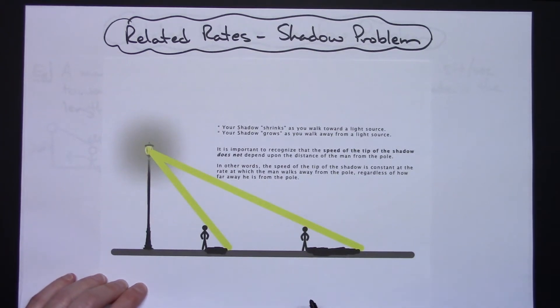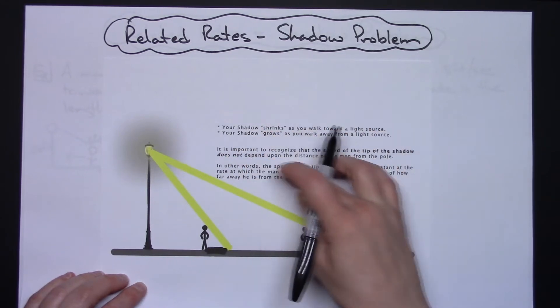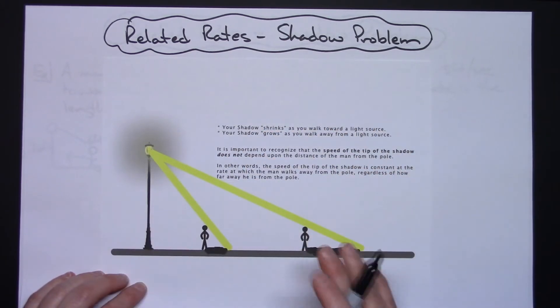In this video I'm going to be working a related rates problem, specifically one that deals with a shadow coming from a light pole. Before we get started, I just want to talk a little bit about this. I do not expect you to be able to read this in the video, more or less just the picture that I have here which is drawn pretty accurately to scale.